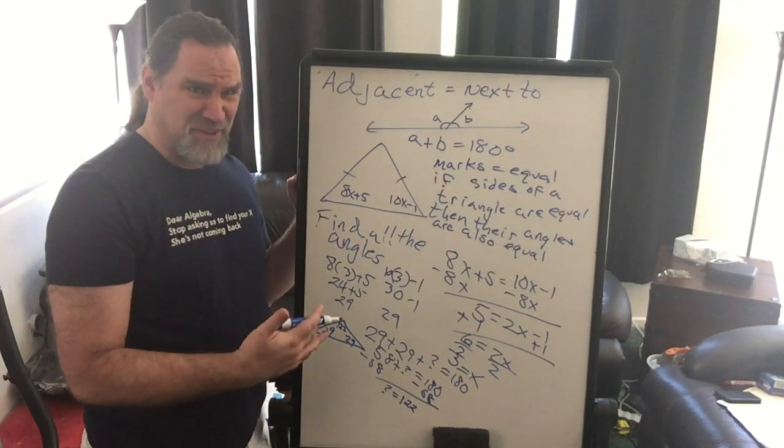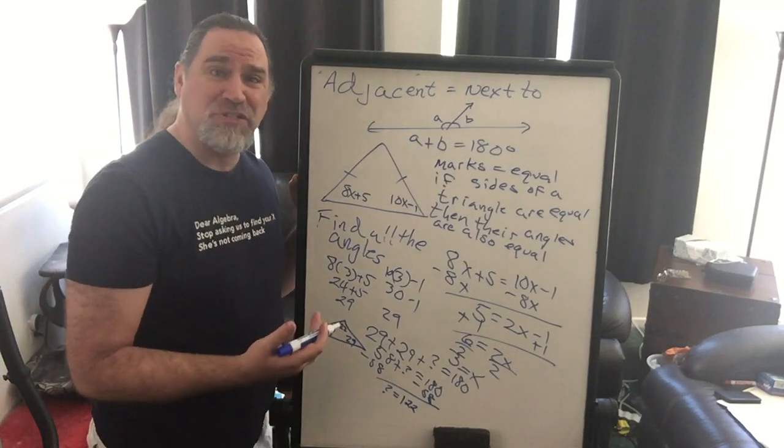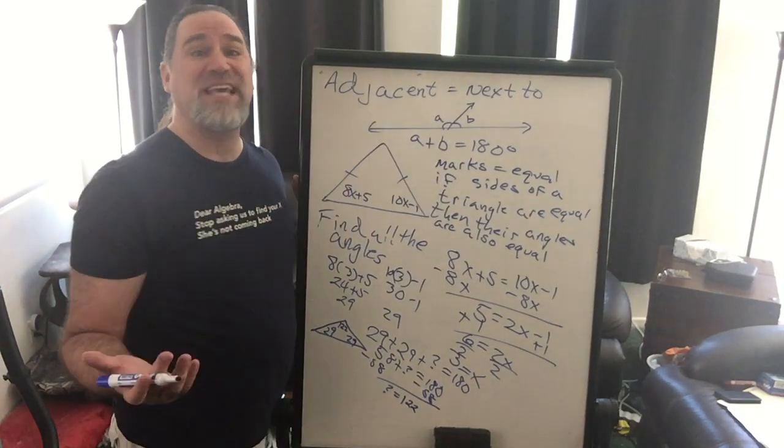But we have now found all of the missing angles without actually being given any of them. We were given that two of them were the same and something about how they were the same.